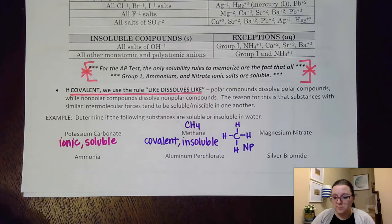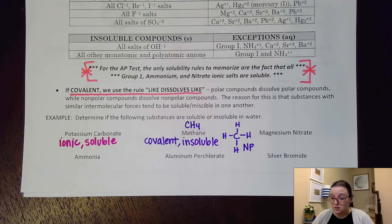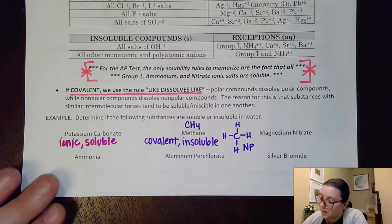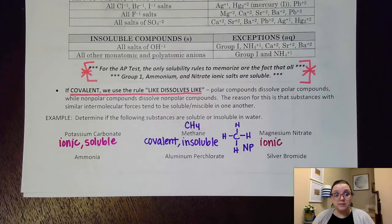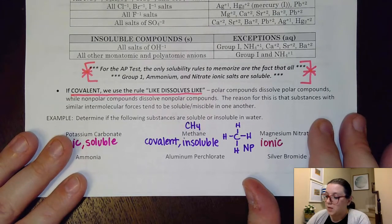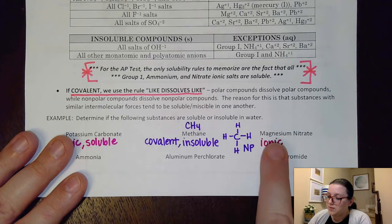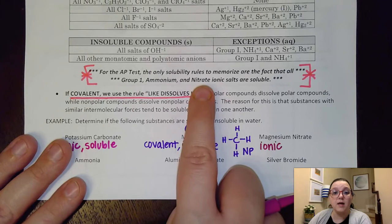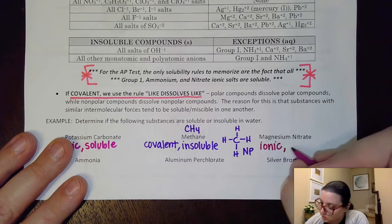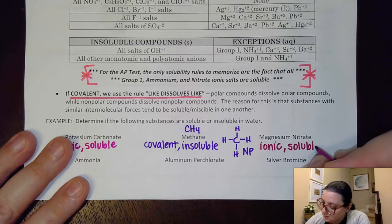Next, magnesium nitrate. First I ask: ionic or covalent? I see a metal–polyatomic ion combination, so it's ionic and I use the top solubility table. It doesn't fit the group one or ammonium category, but it does fit the nitrate category — and nitrate ionic salts are soluble. So magnesium nitrate is soluble.